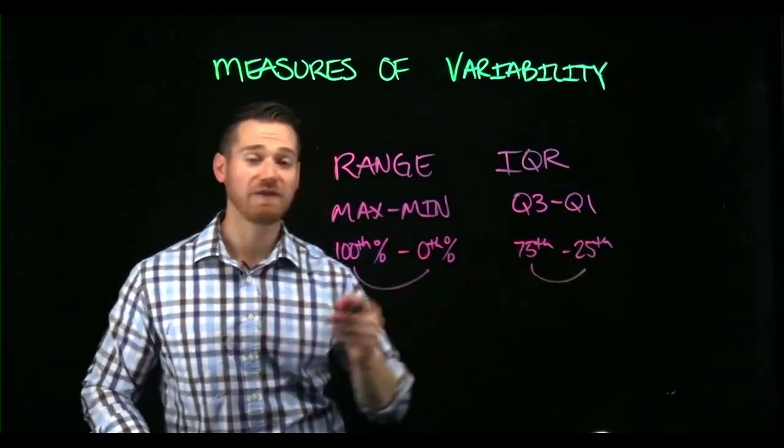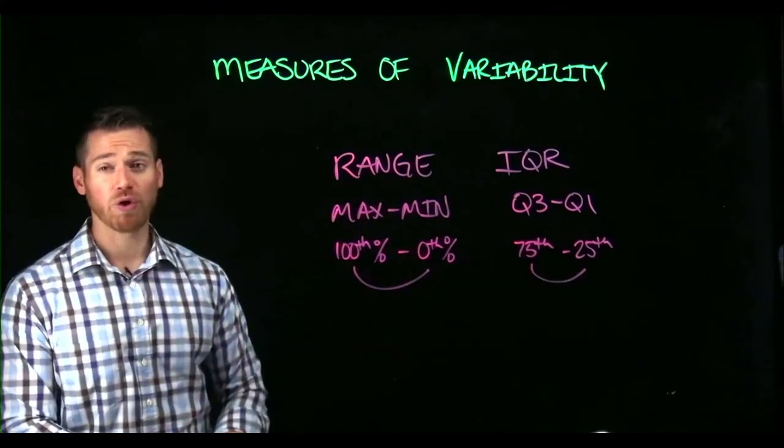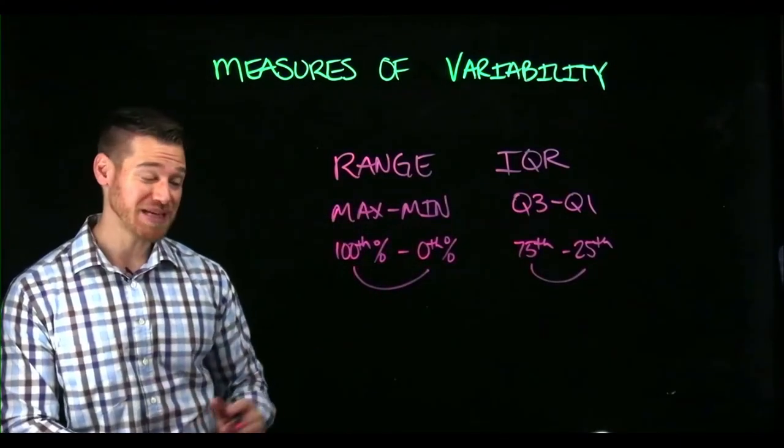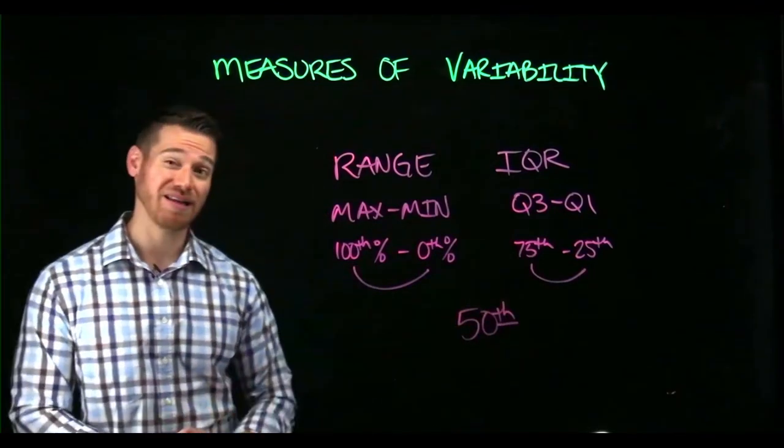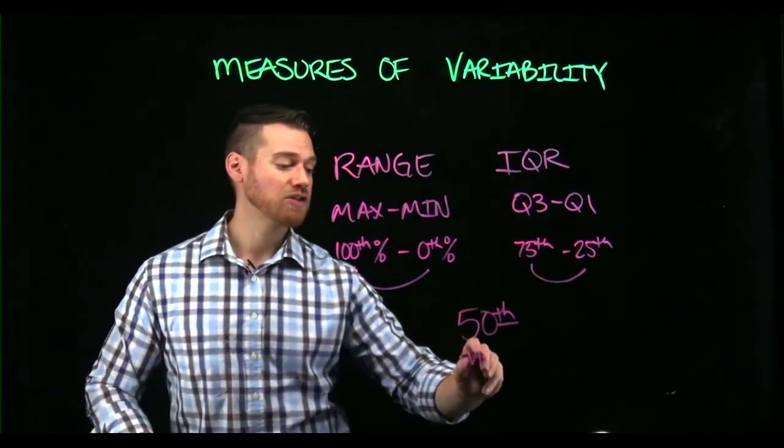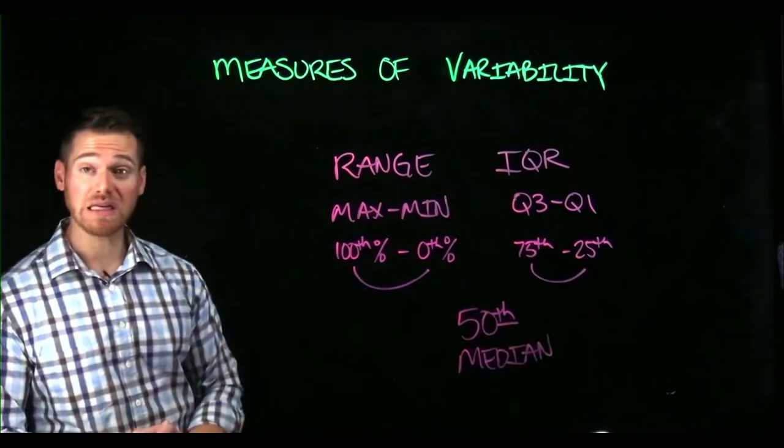The IQR gives us the middle 50% span. Notice all of these work really well with the median because the median is the value at the 50th percentile, the one in the middle. All of these tell us about spread around the median quite effectively.